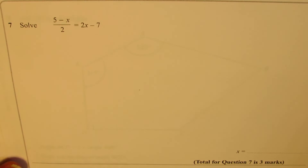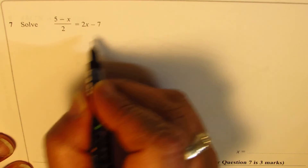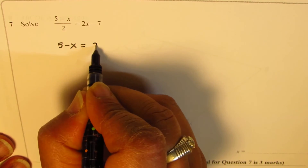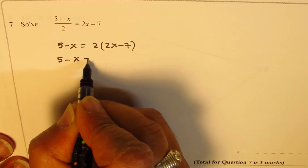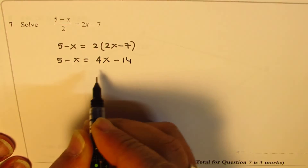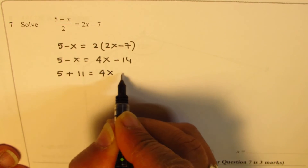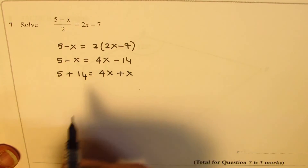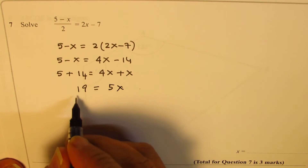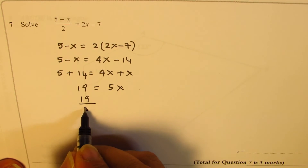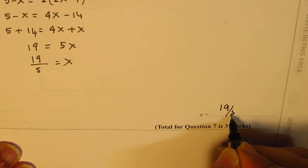Question 7: solve the equation 5 − x/2 = 2x − 7. Multiply through: 5 − x = 4x − 14. Rearranging: 14 + 5 = 4x + x, so 19 = 5x. Therefore x = 19/5.